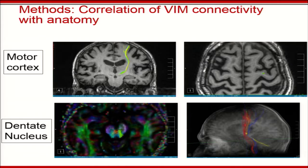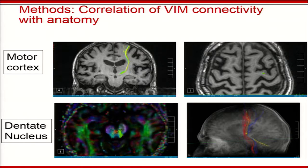The hypothesis was: if this ROI is correctly placed and truly represents the VIM in a patient, it should have structural connectivity to the motor cortex, as seen in the top row, and also to the dentate nucleus. Due to the streamline algorithm used for fiber tracking, we observed as an artifact that most fibers appeared ipsilateral, even though we know from tracing studies that most of these fibers are contralateral dentate in origin.